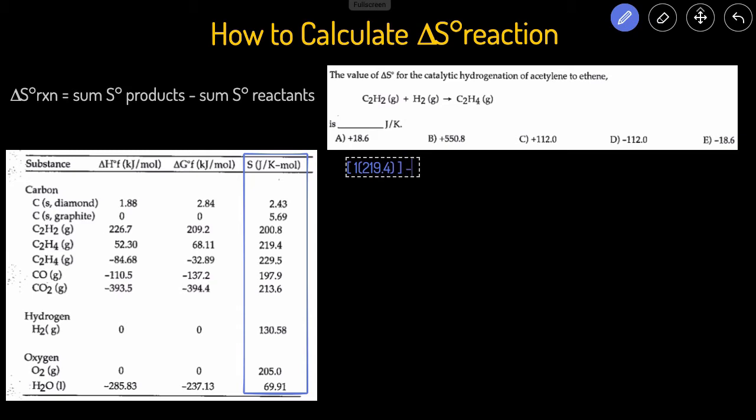Now we're going to minus the sum of the reactants. I'm using brackets here so I can group all the products together and all the reactants together. We have one times the value of the C2H2, which is 200.8, plus one times the value of H2, which is 130.58. Great.